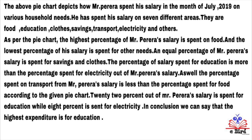The percentage of salary spent on education is more than the percentage spent on electricity from Mr. Pereira's salary. The percentage spent on transport from Mr. Pereira's salary is less than the percentage spent on food, according to the given pie chart. 22% out of Mr. Pereira's salary is spent on education while 8% is spent on electricity.